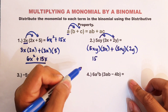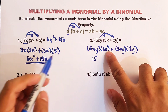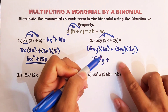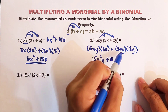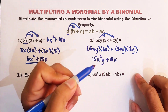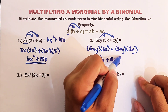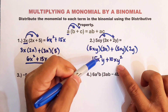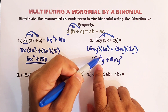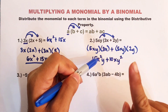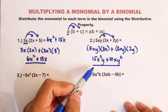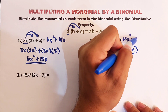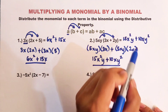Let's multiply: 5 times 3 is 15. For the variables, x times x is x squared, then copy the variable y — giving 15x squared y. Next, 5 times 2 is 10. The x is a single variable so we copy x, and y times y is y squared — giving 10xy squared. Can we combine them? No — though they have the same variables, the x here has an exponent of 2 and the x here has an exponent of 1. So the product is 15x squared y plus 10xy squared.